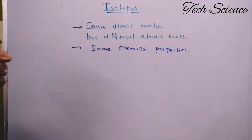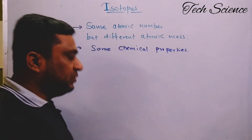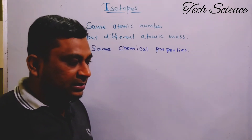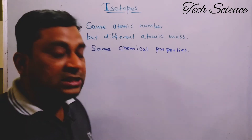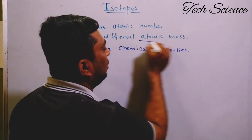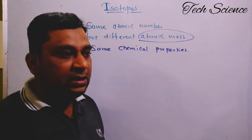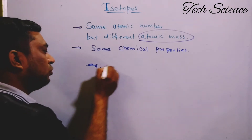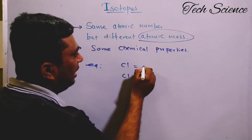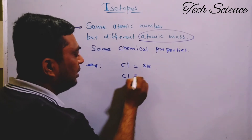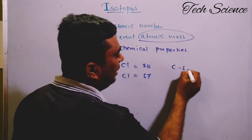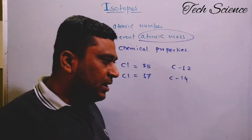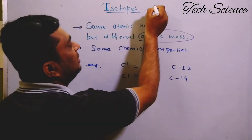Now, in Mendeleev's periodic table, elements are classified in the increasing order of their atomic mass number. If we observe isotope examples — chlorine has two isotopes with atomic masses 35 and 37, and carbon has isotopes C-12 and C-14. There are many other examples you should know.